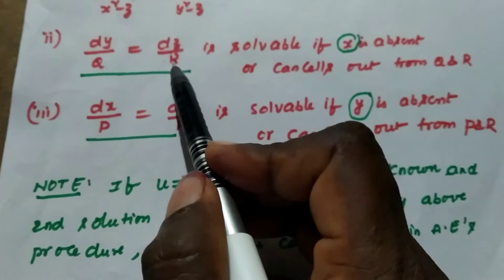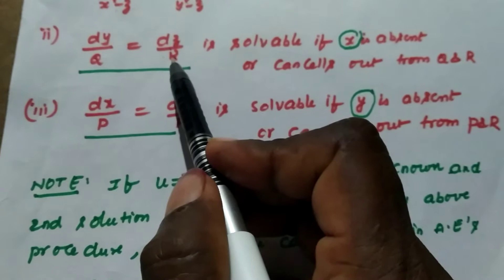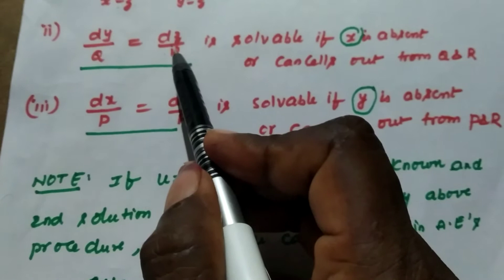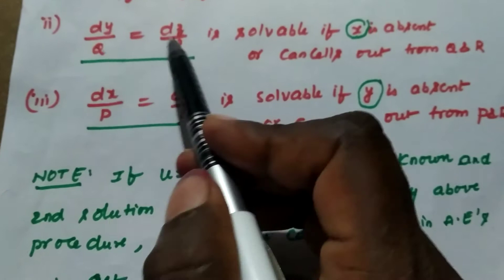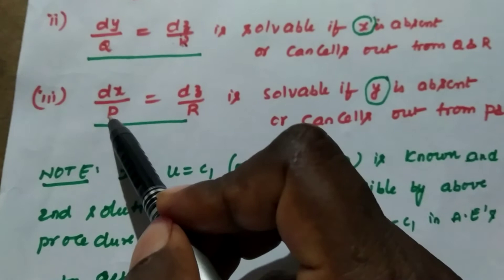The question is when you are not able to find the solution from these two fractions. The answer is if you are not able to cancel out x from the denominators q and r, then you cannot find the solution from these two fractions. Another set of two fractions is dx by p equal to dz by r.